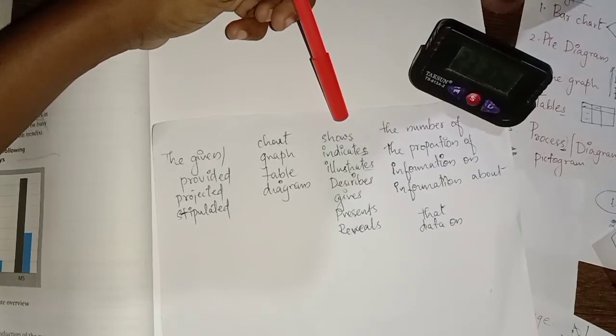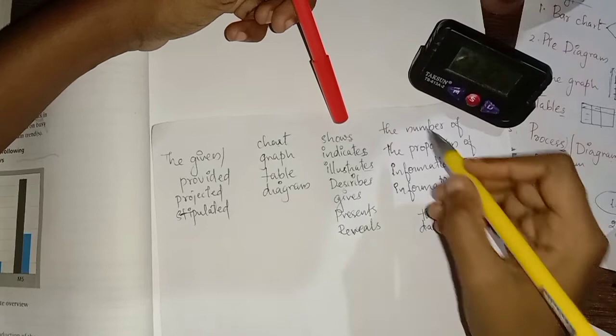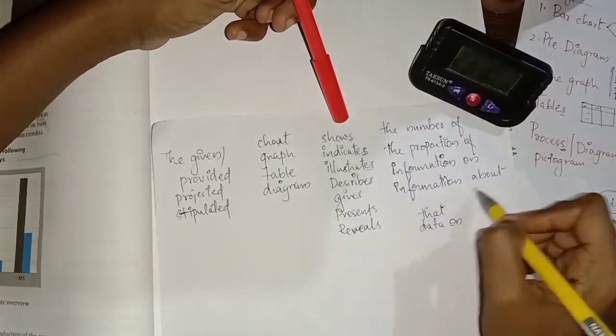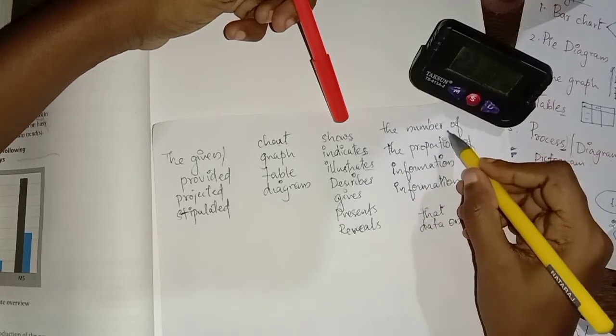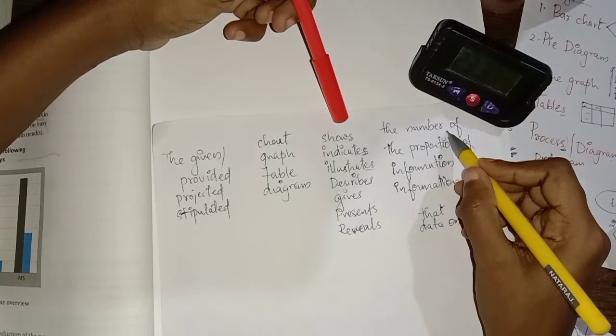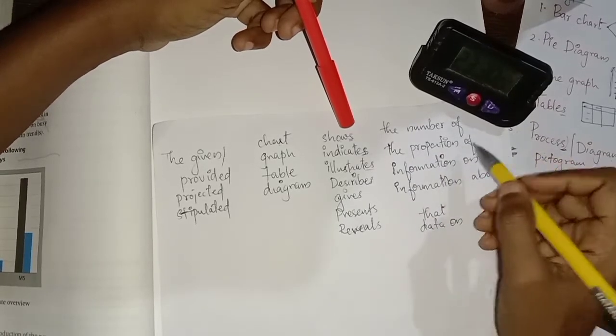Especially how to start an introduction - many of them have confusion regarding how to start. So this particular thing is based on what information is provided. Sometimes it will be in the form of proportion, sometimes it's in the form of numbers or amount of things or amount of goods or stuff like that.